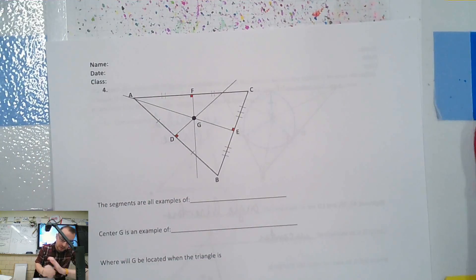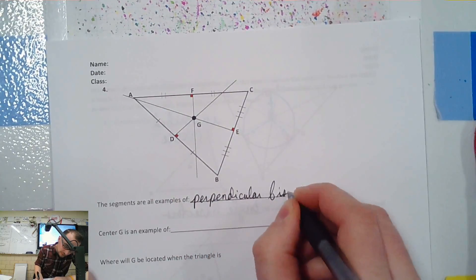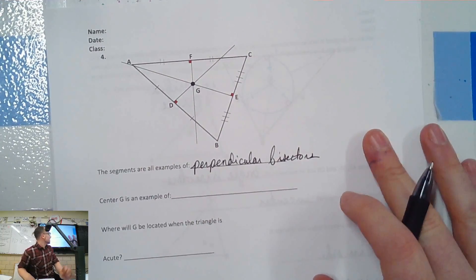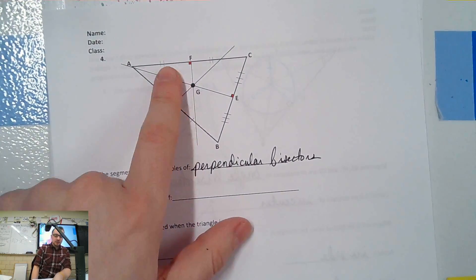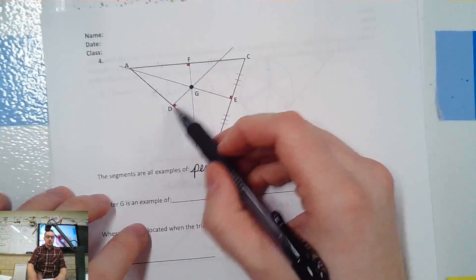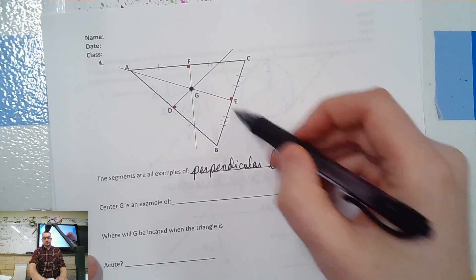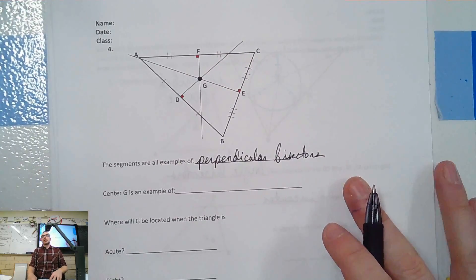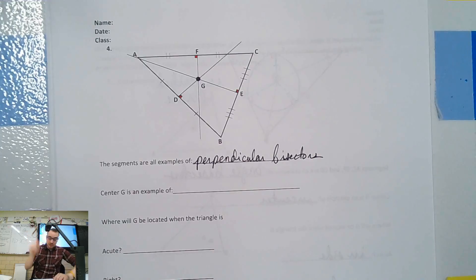If we just say bisectors, we're talking about bisecting sides — D, E, and F are all midpoints. That's given to us. So we go from the midpoint straight up at 90. So G is an example of the circumcenter. It doesn't have a catchy name like orthocenter-orthogonals or medi-center-medians. Perpendicular bisectors create the circumcenter. Circumference means distance around, because circum means around. Circumcircle is a circle that goes all around. We call it a circumscribed circle.